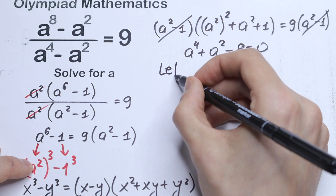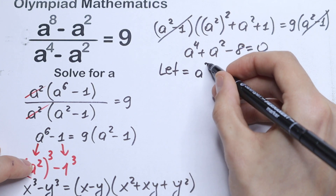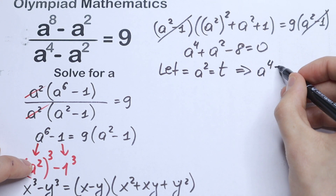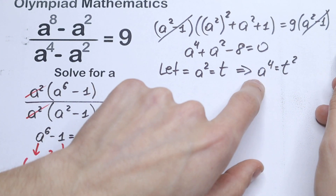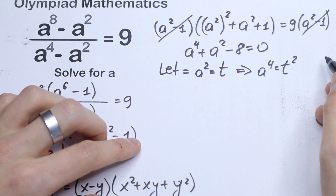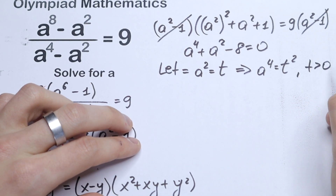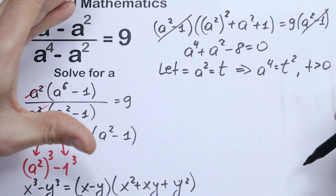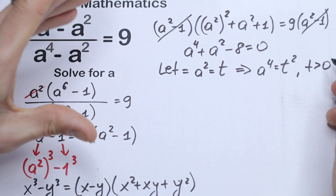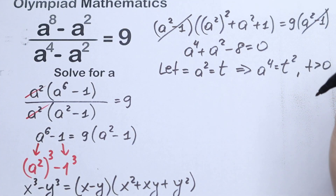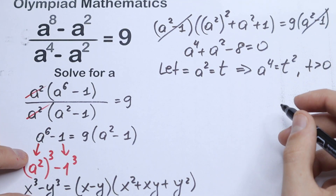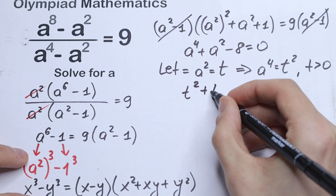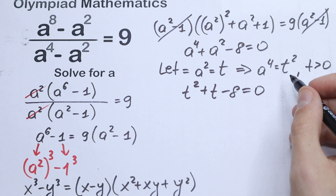So let's use a substitution. Let a squared equal t, and from here a to the fourth power equals t squared — just raising both sides to the second power. Note that t must be greater than zero because we have a squared term. Let's substitute all of these into our quadratic equation. As a result we will have t squared plus t minus 8 equal to zero.